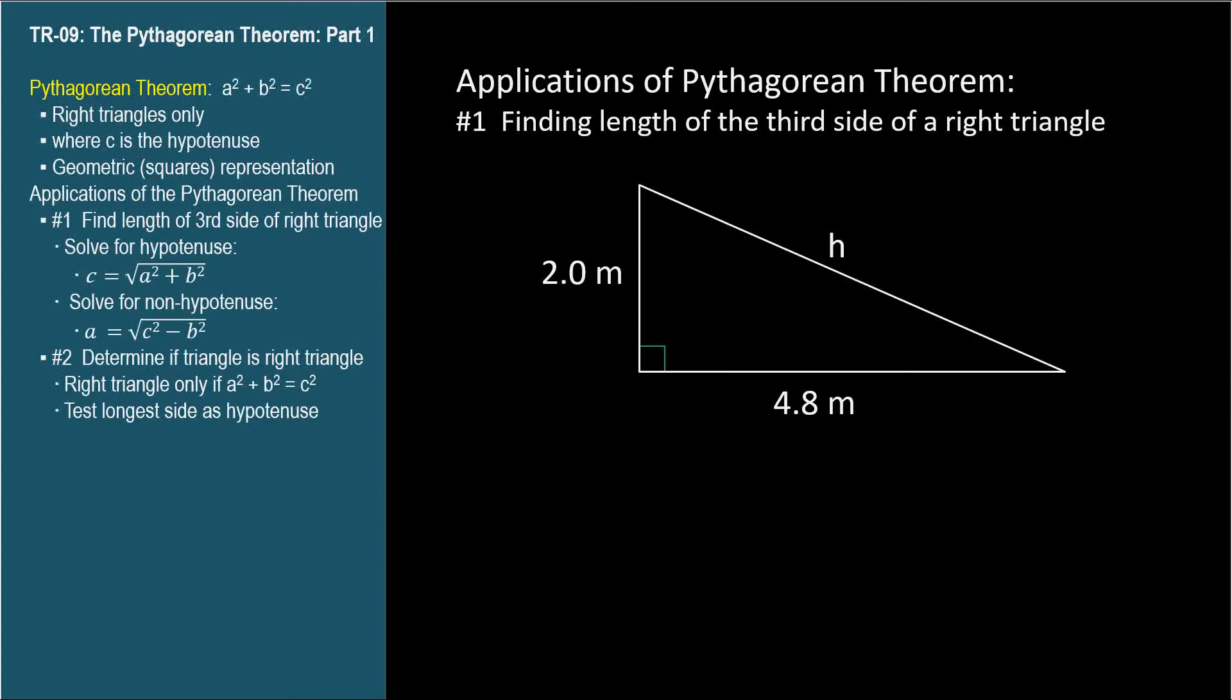a squared plus b squared equals c squared, while the hypotenuse squared equals the sum of the other two squared. So h squared equals 2.0 meters squared plus 4.8 meters squared.